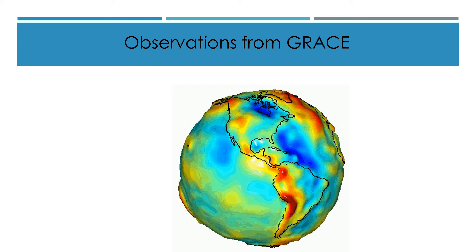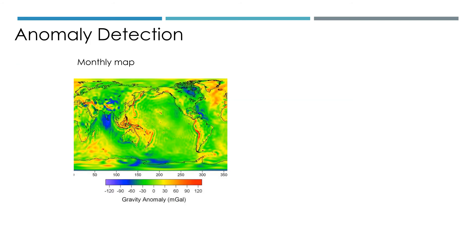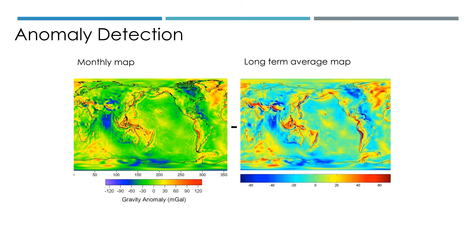GRACE data is a strong indicator of water resource parameters. It provides monthly data, so for each month we can subtract the long-term average to get an anomaly — telling us whether there is an increasing or decreasing trend of water storage in an area, including groundwater storage and soil moisture.